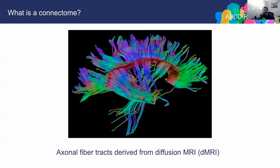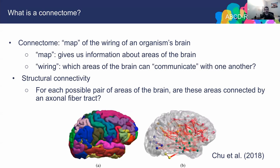What is a connectome? This picture shows the axonal fiber tracks from a diffusion MRI. A connectome is a map of the wiring in an organism's brain — it gives us information about different areas in the brain and tells us which areas can actually communicate with one another. The primary thing we're concerned with here is structural connectivity: for each possible pair of areas in the brain, does there exist an axonal fiber track between those areas?